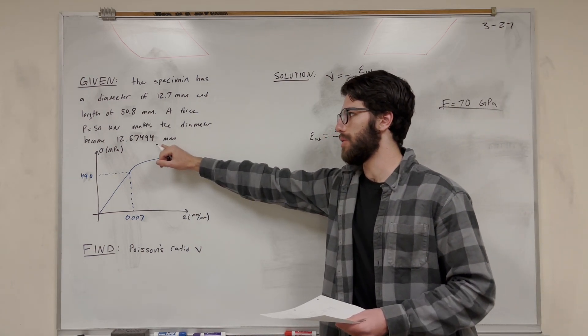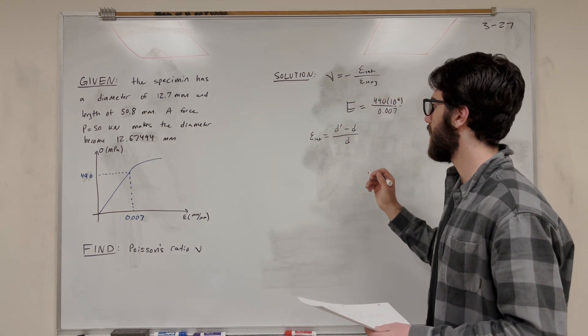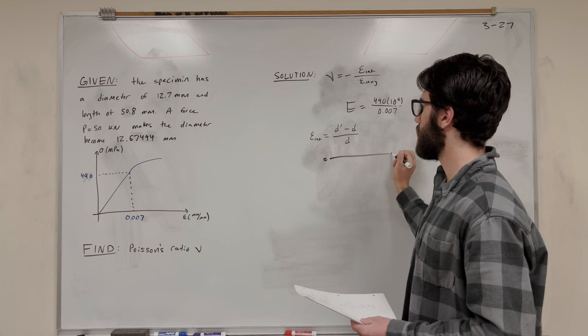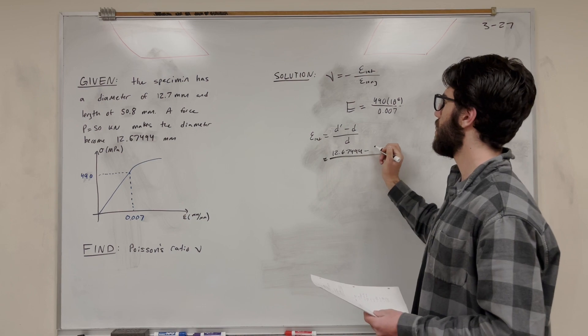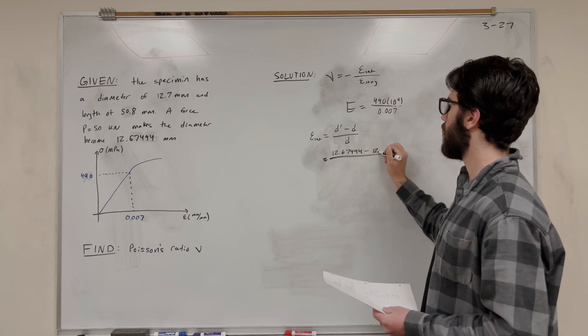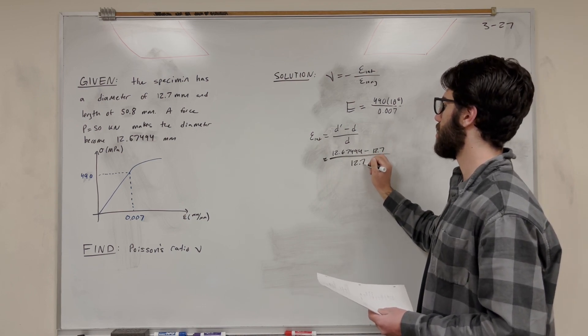So we know D prime is this new diameter, which happens when the P is applied. So let's just plug in our numbers for this. So it's going to be 12.67494 minus the original diameter, 12.7, over the original diameter, 12.7.